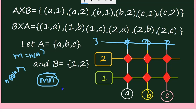Moreover, while writing, I have written in one order: (a,1), (a,2), (b,1), (b,2), (c,1), (c,2). But suppose you change the order — that also represents A cross B. The order of listing does not change the set itself.